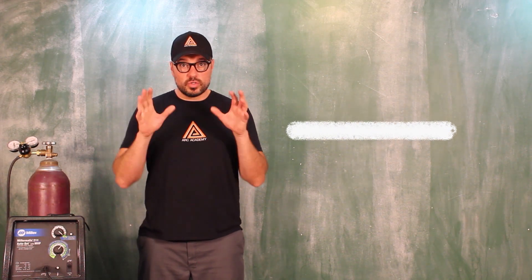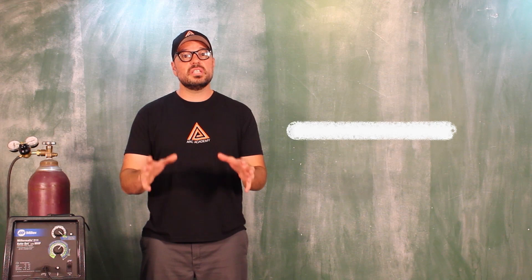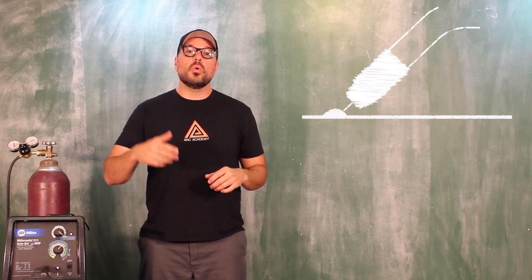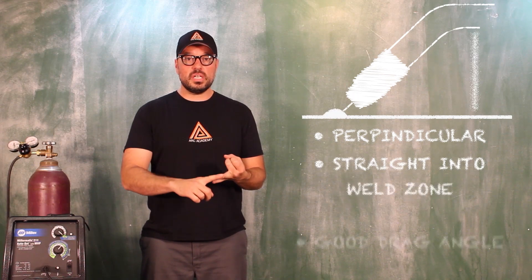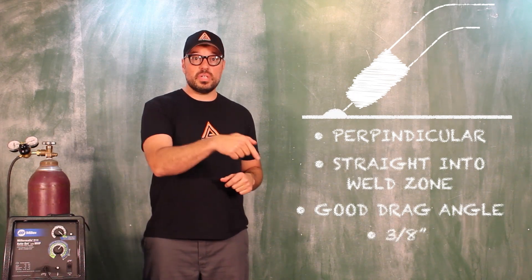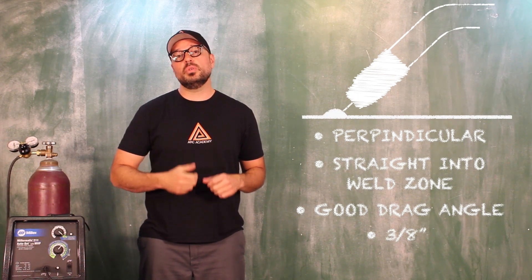So when you're doing this, here's the deal: you have to stay in the same positioning with your rules. You're still going to be perpendicular, straight in, good drag angle, three-eighths inch distance the entire time you are welding.